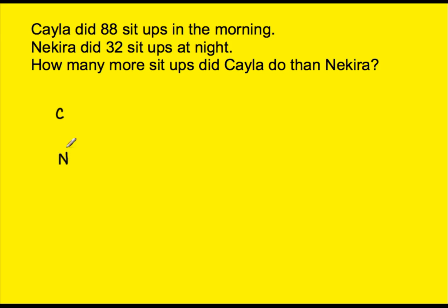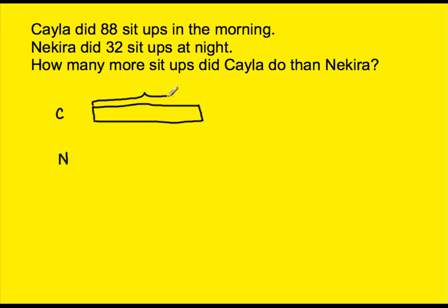So we have Kyla and Nakira. Whenever we set up a comparing problem, we give each person their own bar. Kyla did 88 sit-ups in the morning, so I'm going to draw a bar — a bar is simply a rectangle, like a thickened number line — to represent how many sit-ups Kyla did. Then you draw a brace from the beginning to the very end and label how much it's worth: 88 sit-ups. I put a check by it to let myself know I've taken care of that piece of information.